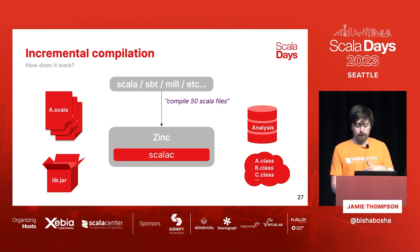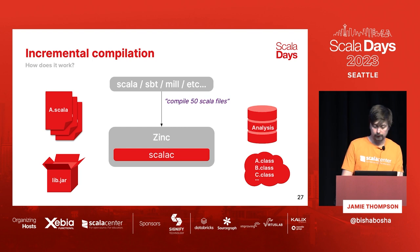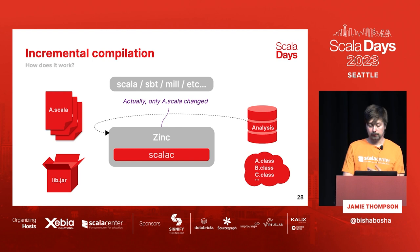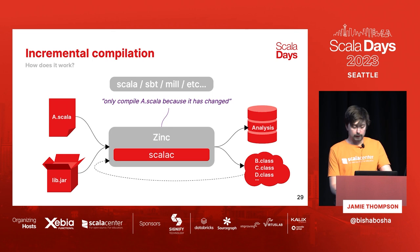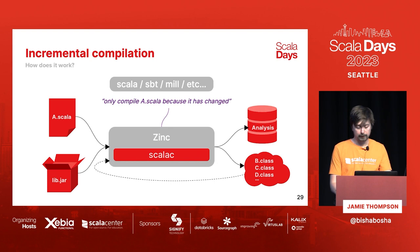Then, say you edit the A file and try to recompile. It will say compile all those files, but because we have the analysis — a cache of all changes, APIs, and so on — we can say only A changed, so let's compile just that. We feed in the class path from the previously compiled classes and reproduce the same output.